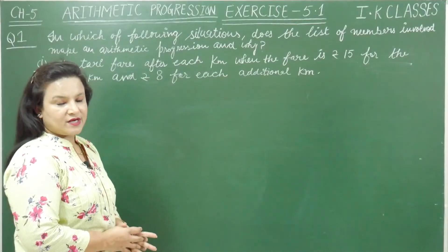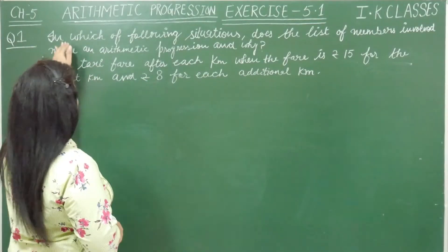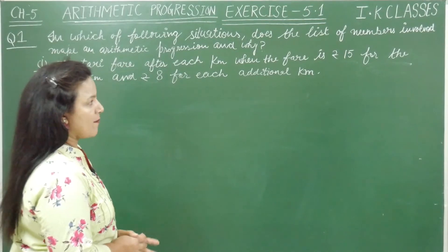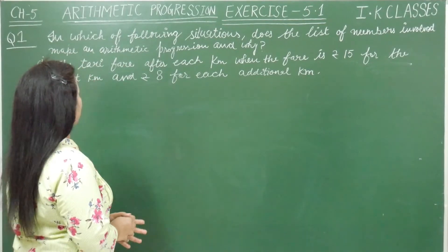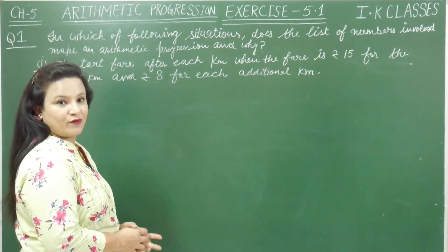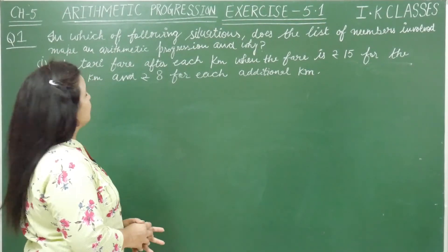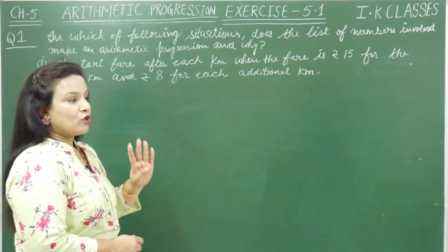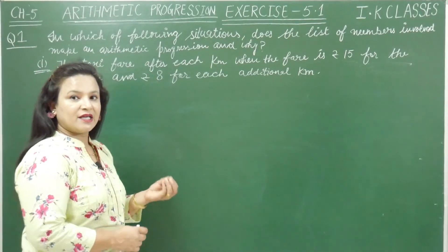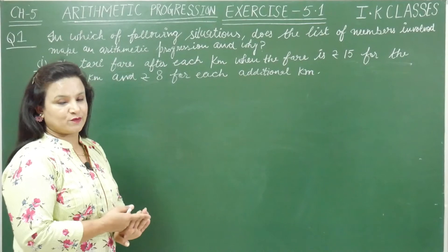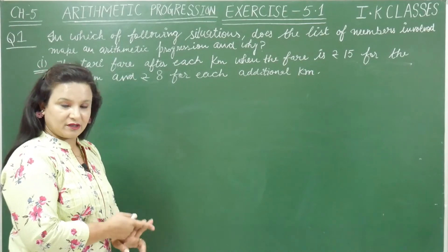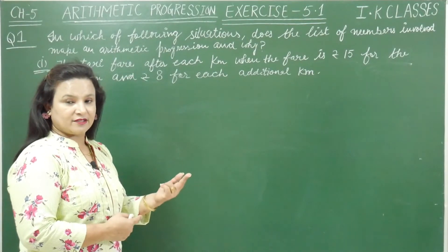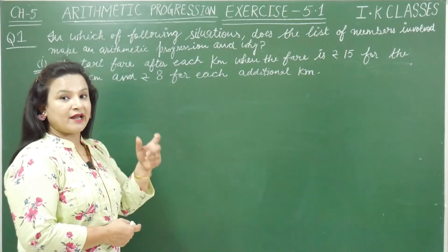Students, the first question is: in which of the following situations does the list of numbers involved make an arithmetic progression and why? The first question has 4 situations given. We have to tell whether these 4 situations form an arithmetic progression or not, and if so, why.